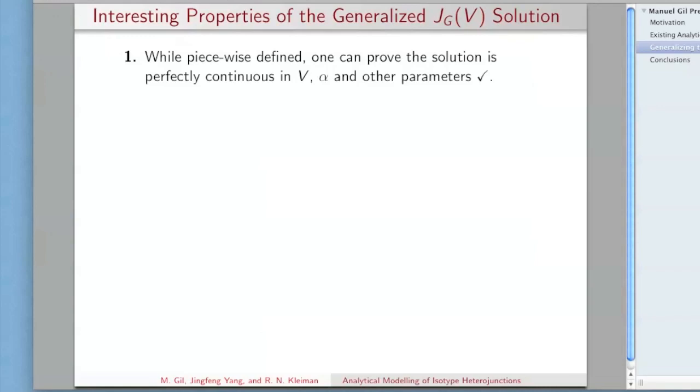First of all, it's piecewise defined, but you can prove in a very rigorous mathematical sense that it perfectly continues in alpha and the other parameters. It contains, as a special case, the expression that I showed you from Sze, so it's perfectly consistent with that. That is the very minimum that you demand from any generalization.